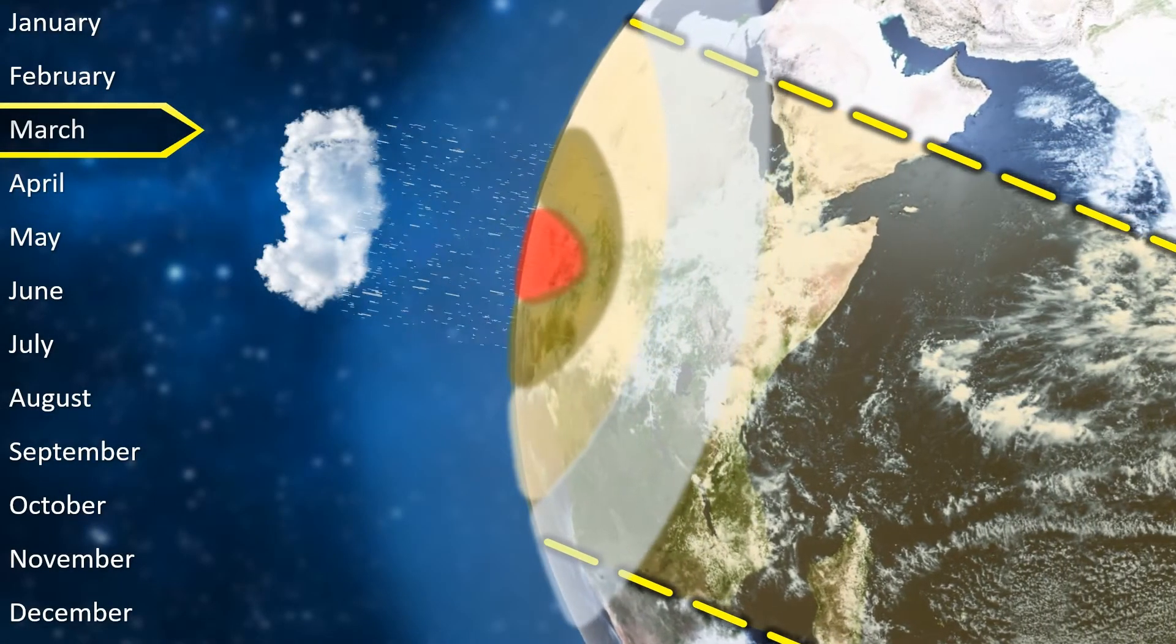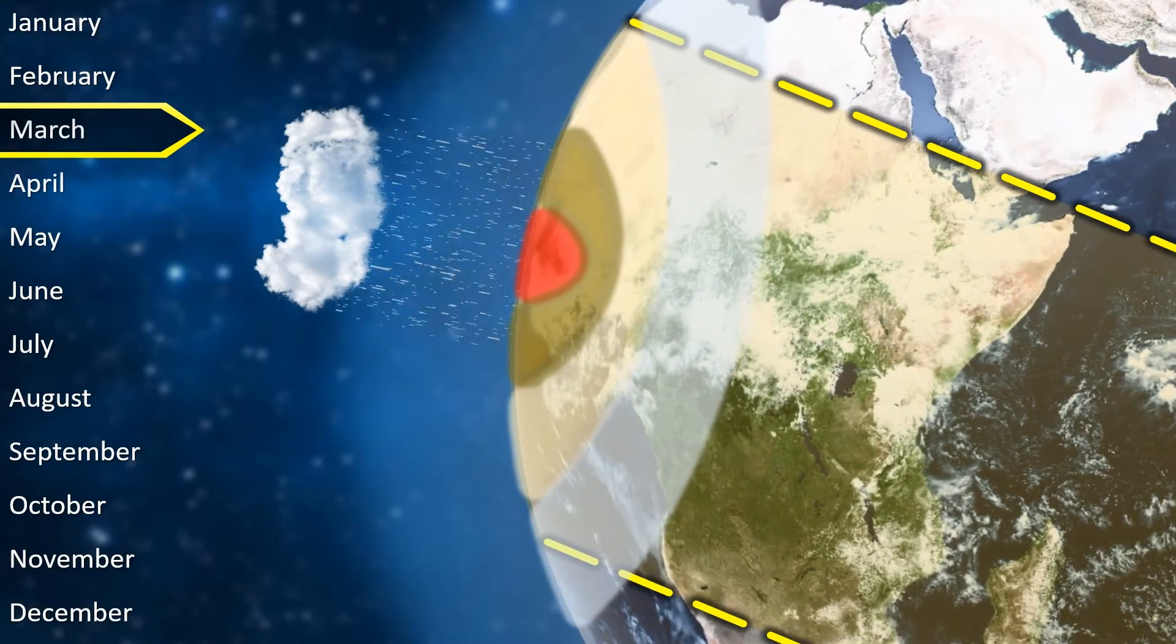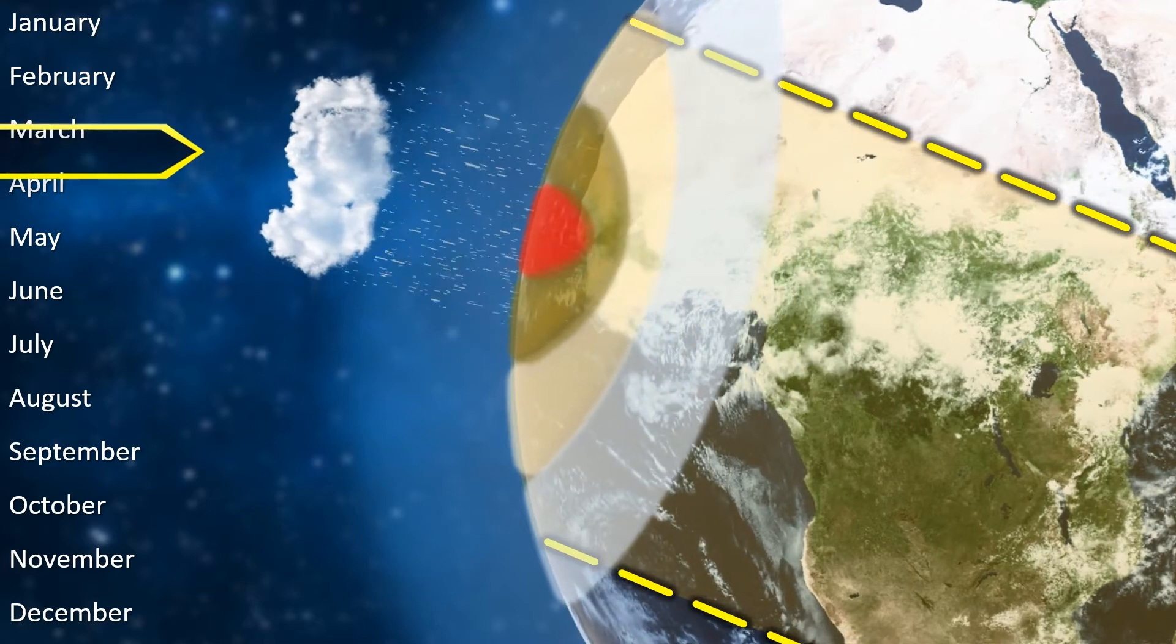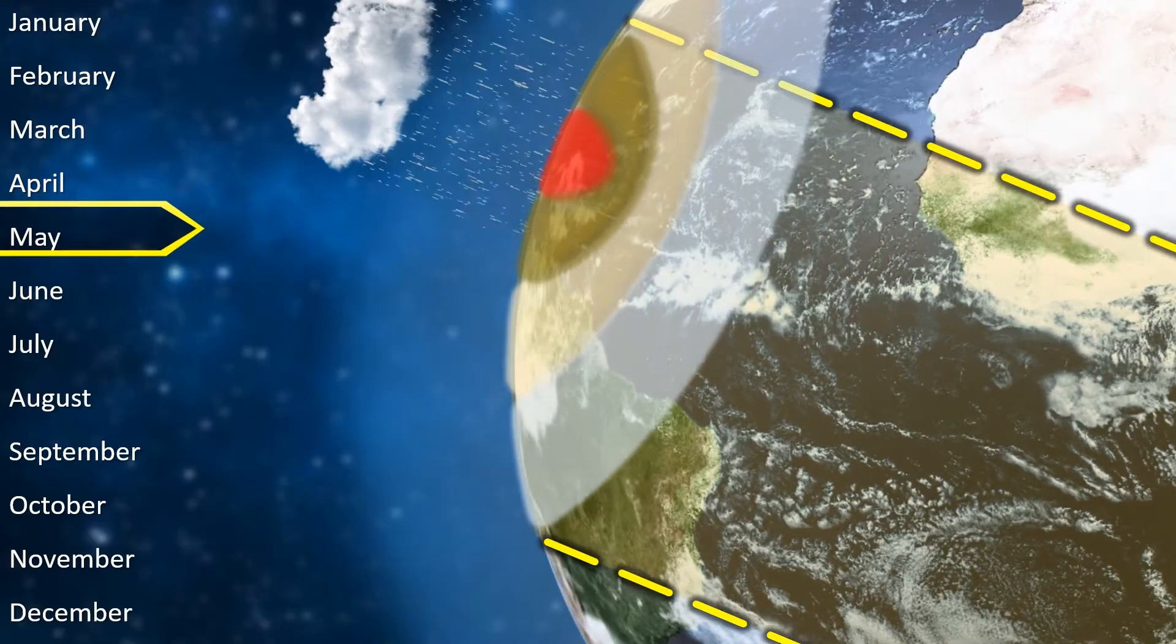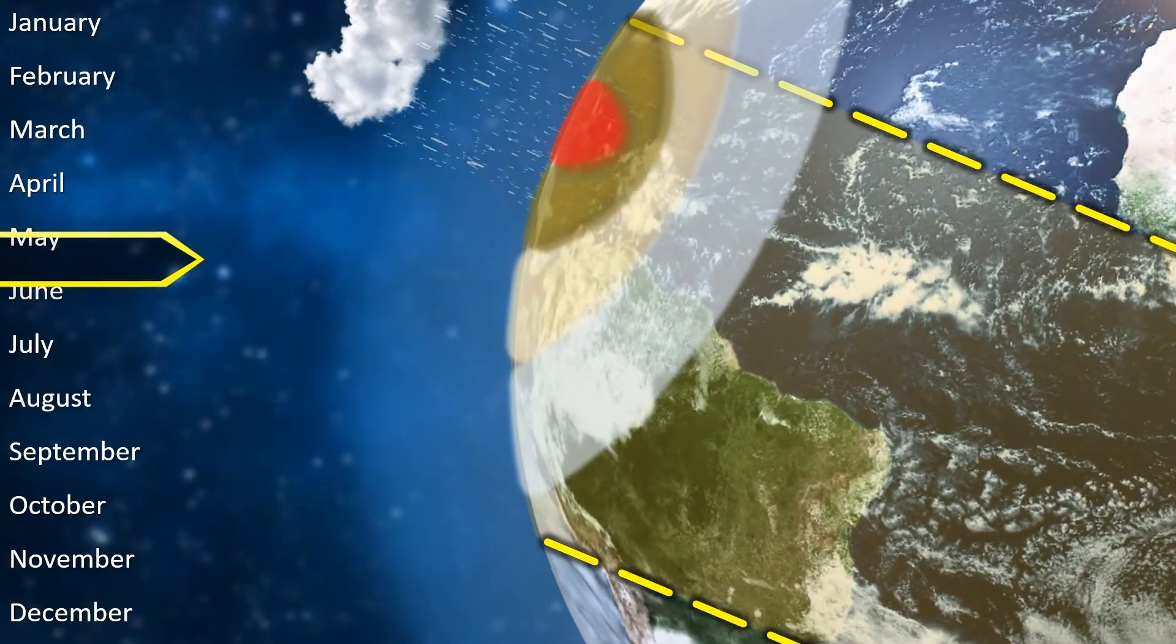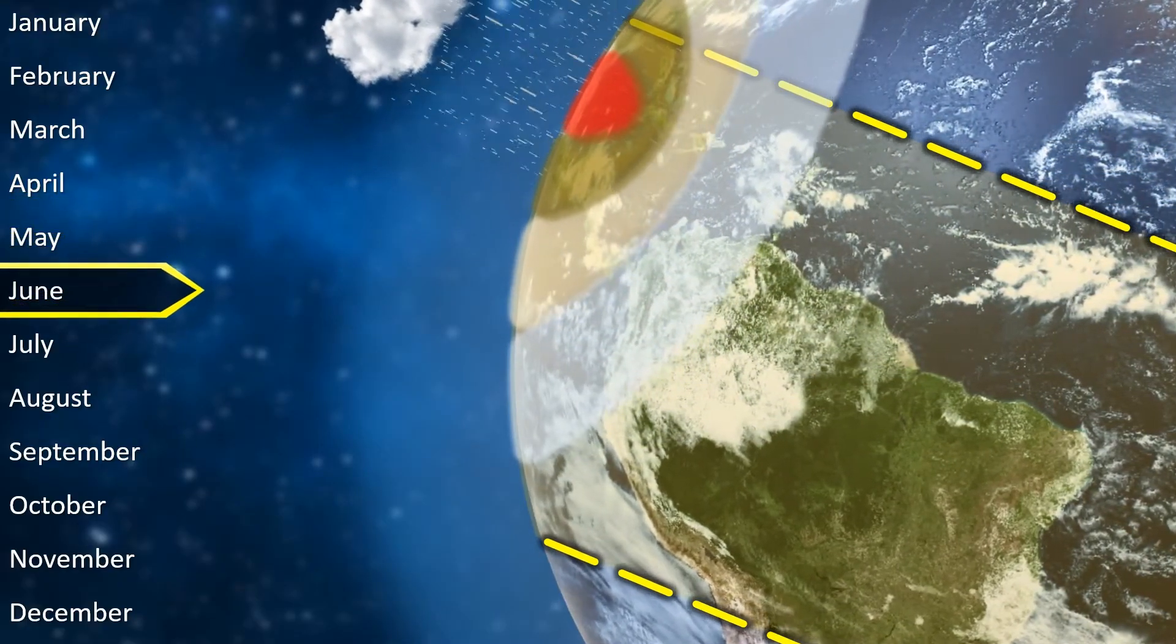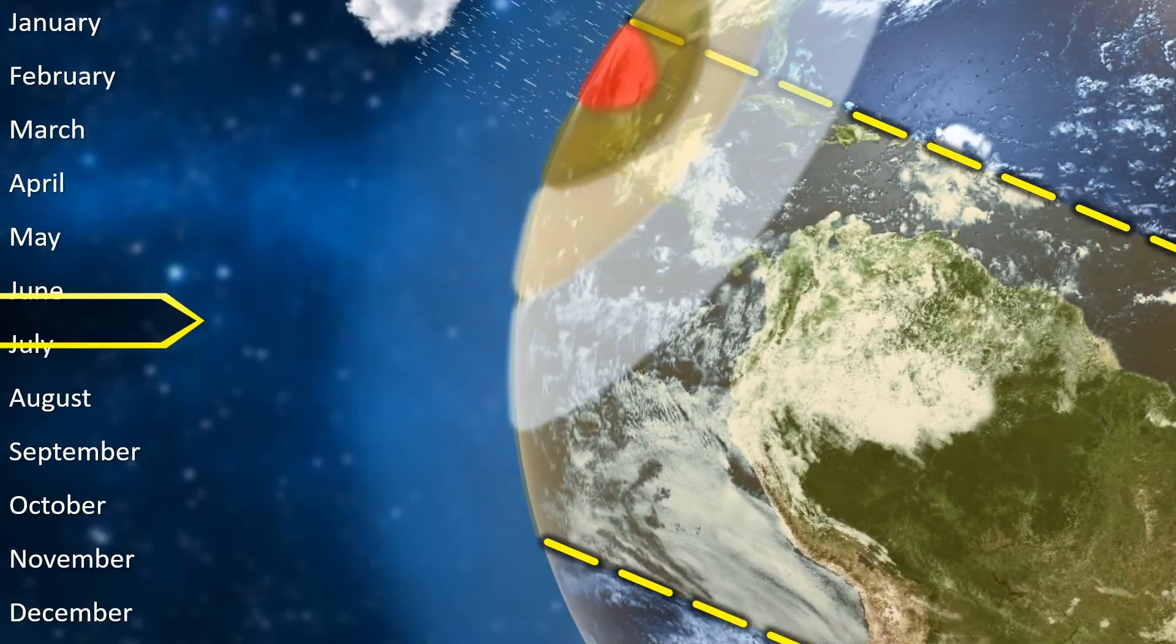Now, for the big picture. We'll start in March, when the ITCZ is along the equator. As the year progresses and the Sun is concentrating more of its energy towards the Tropic of Cancer, so too will the ITCZ move to meet the area of solar concentration, bringing with it high levels of precipitation.